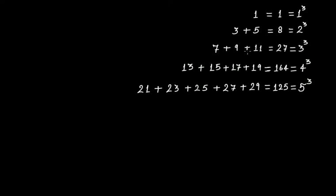Four cubed equals 64, expressed as 13 plus 15 plus 17 plus 19. Each of these is an odd number, giving us the addition of four consecutive odd numbers — matching the number four.